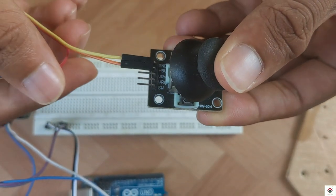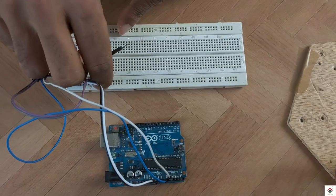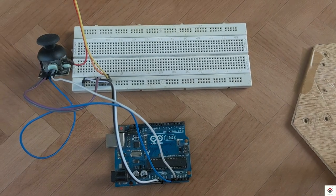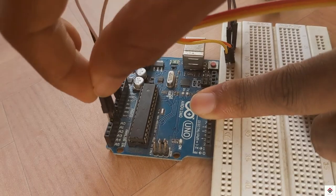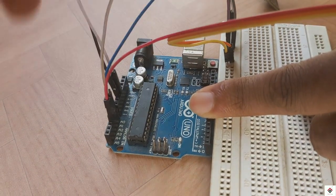Similarly from joystick 2, the 5 volt and ground goes to Arduino 5 volt and ground. And here only the x axis connected to Arduino analog pin A2.